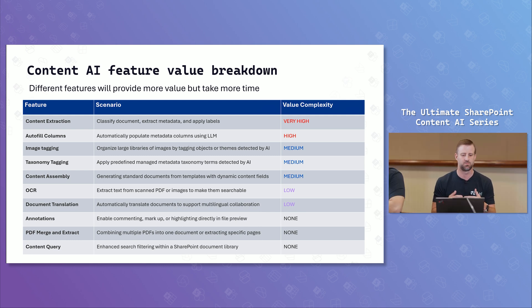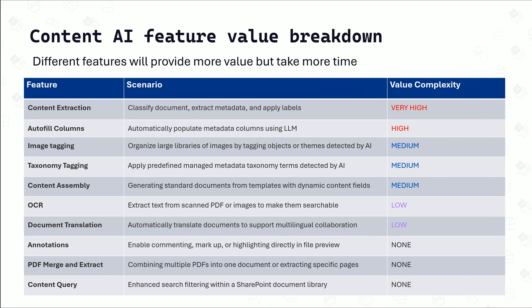Content extraction and autofill will have a higher cost consumption, but they will give you more value than other solutions because they take more time to set up. Things like document translation, annotations, and PDF merge and extract functions are just part of the solution. As they become more complex, you need to spend more time to find that value. One of the things mentioned at the beginning is there is a Microsoft 365 assessment tool available for you today to scan your organization — and it's free.